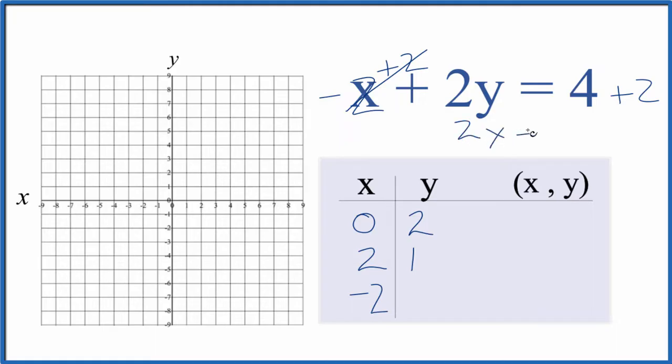So 2y equals 6. We divide both sides by 2, and we have y equals 6 over 2. That's 3.